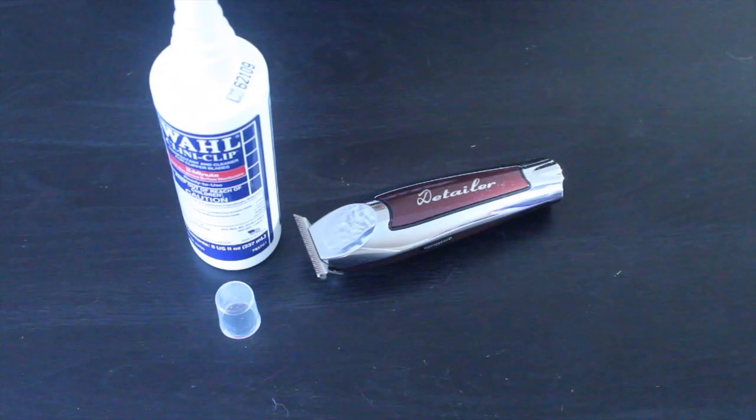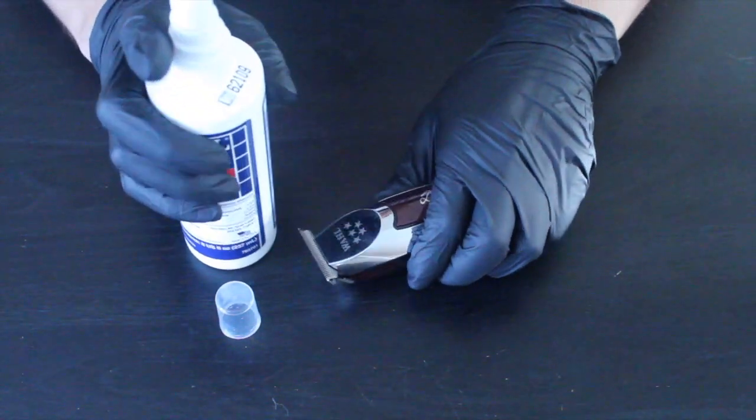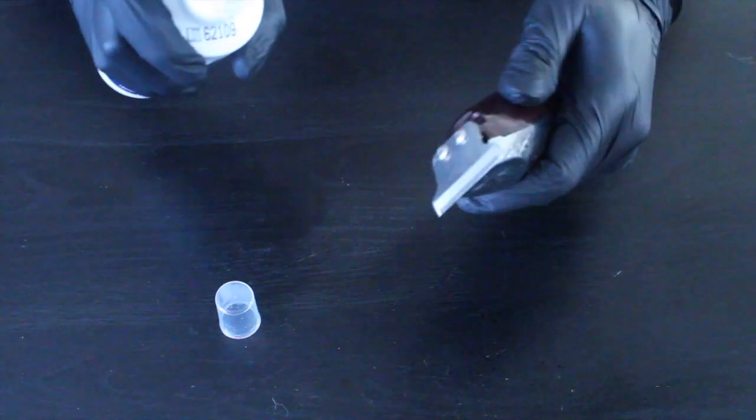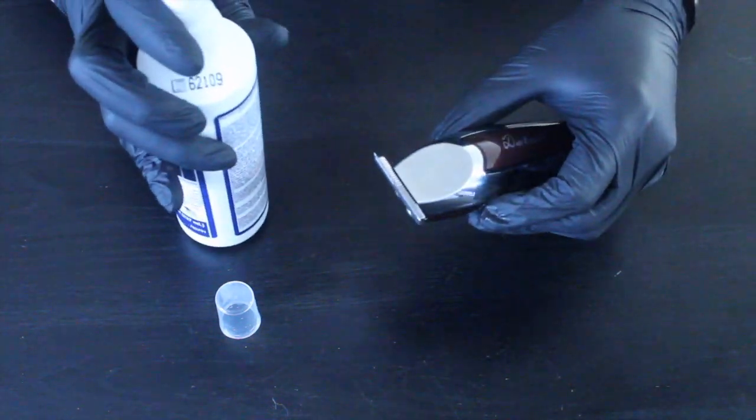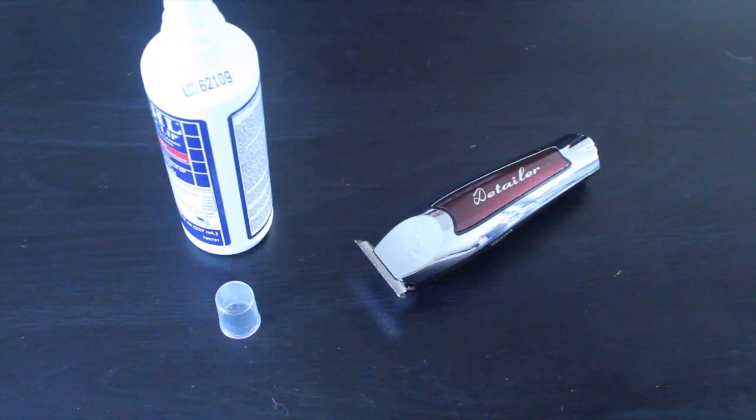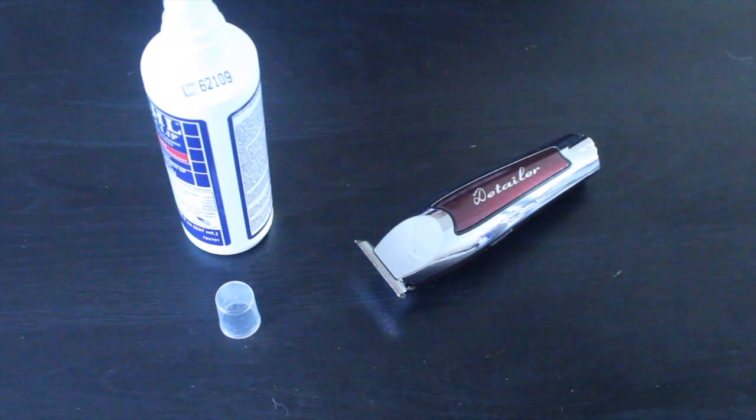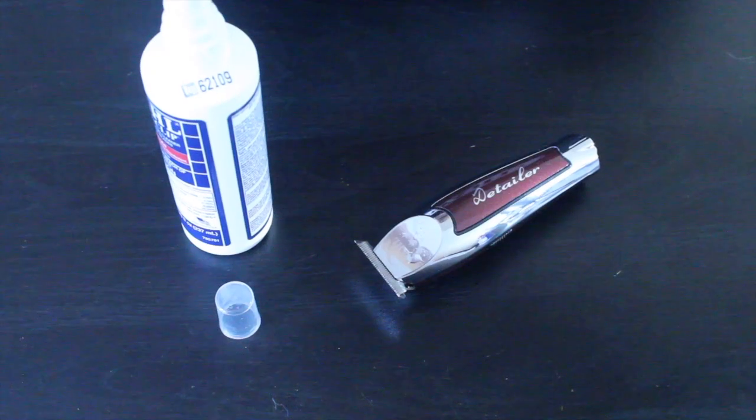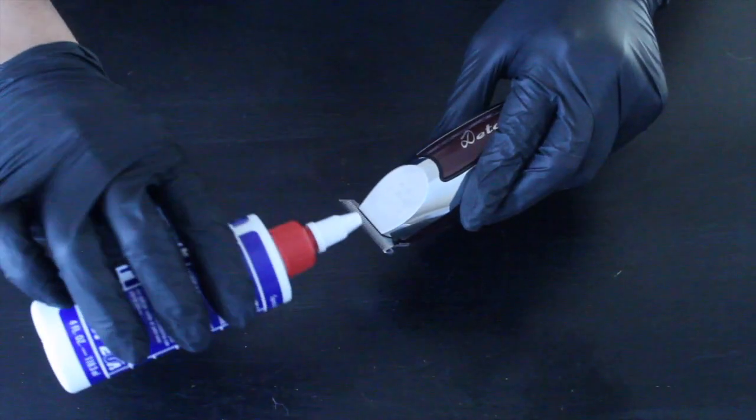After that, you're going to want to spray Clini Clip from four inches away, three sprays from the top right, from the top left, and then covering the bottom. Once this is done, let it sit for two minutes without wiping off for complete disinfection.